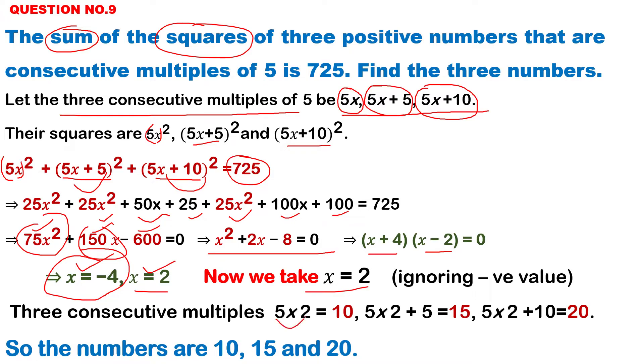So first number will be 5 into 2, 10. 5 into 2, 10 plus 5, 15. 5 into 2, 10 plus 10, 20. Now these three numbers, 10, 15 and 20.